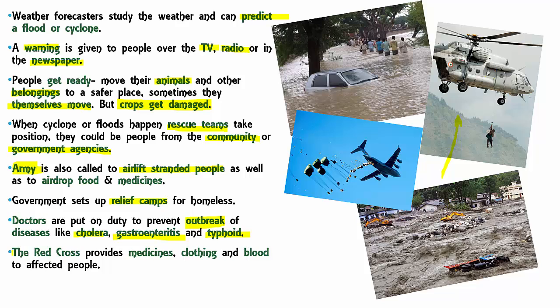There is an organization called the Red Cross which comes forward in times of need to provide medicines, clothing, as well as blood to affected people. As you can see, the amount of damage cyclone and floods causes to us and our property is enormous.